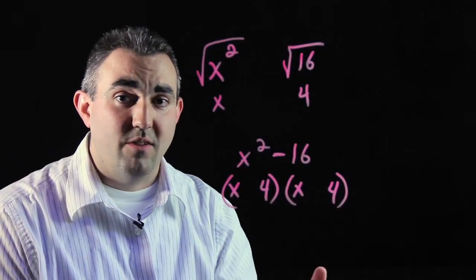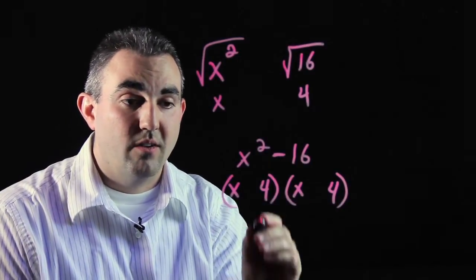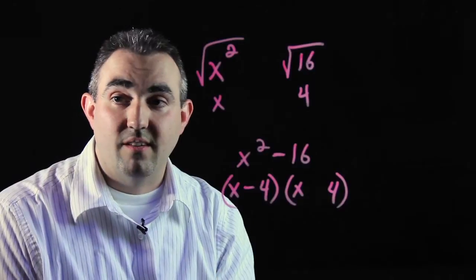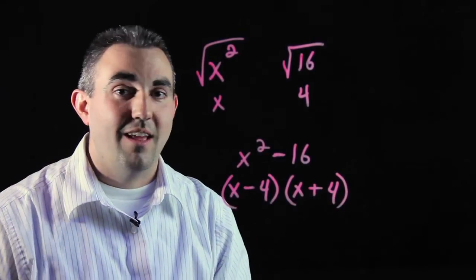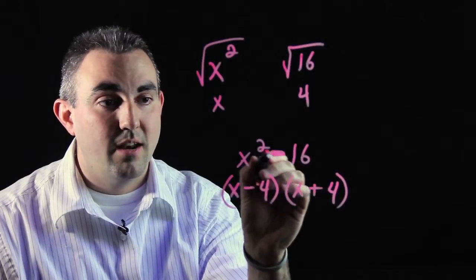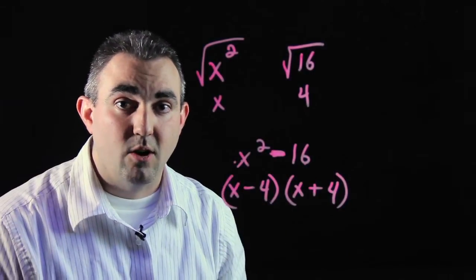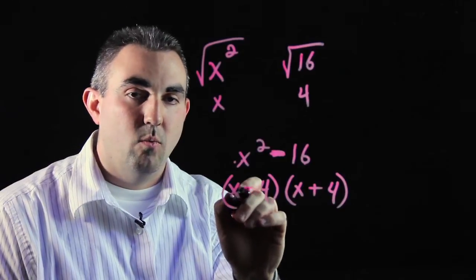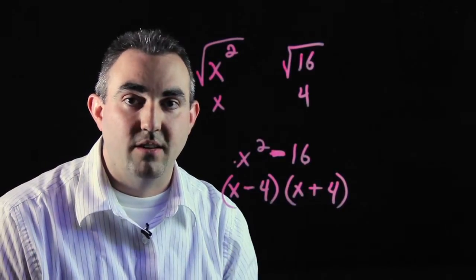Finally, to finish off this problem, difference of two squares, one of the parentheses has to have a minus sign, the other one has to have a plus sign. That's true in any difference of two squares case. If there's a minus sign and both pieces are perfect squares, one has to be subtraction, one has to be addition.